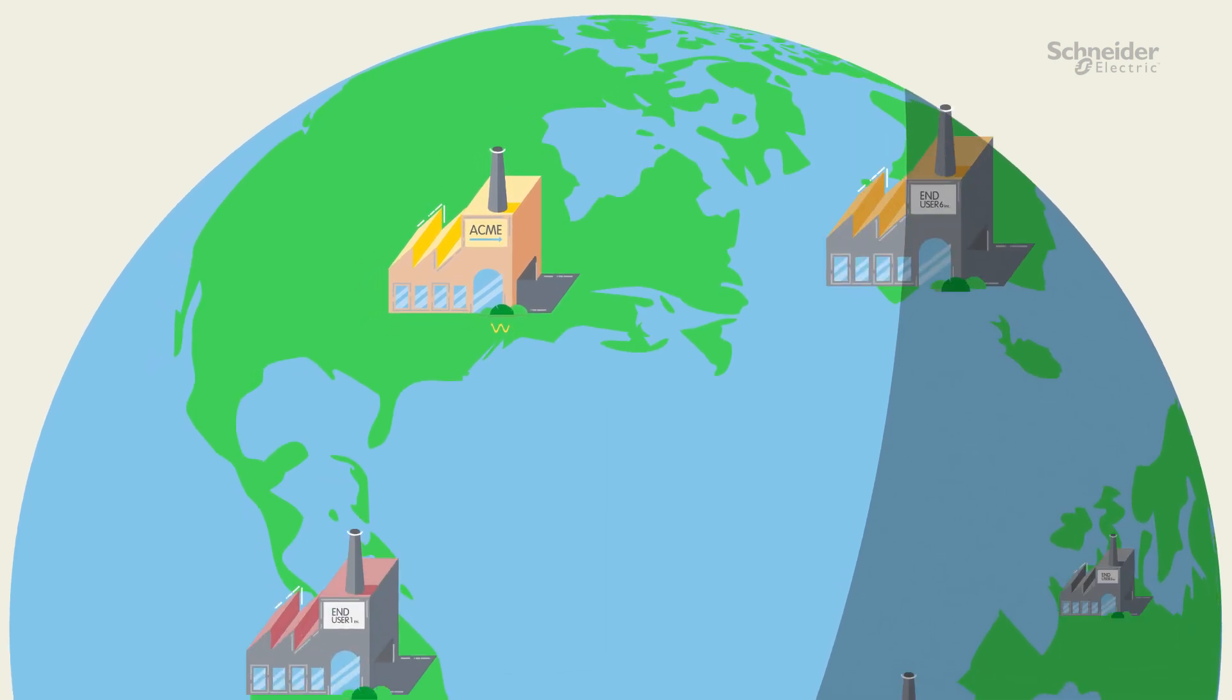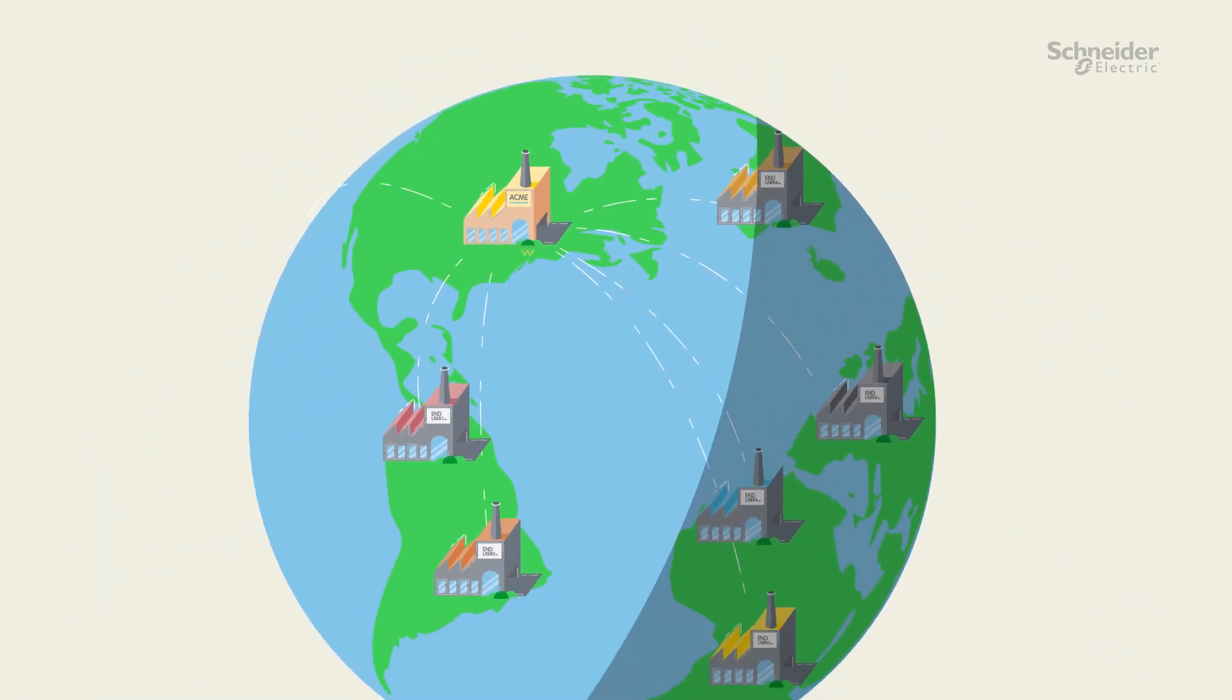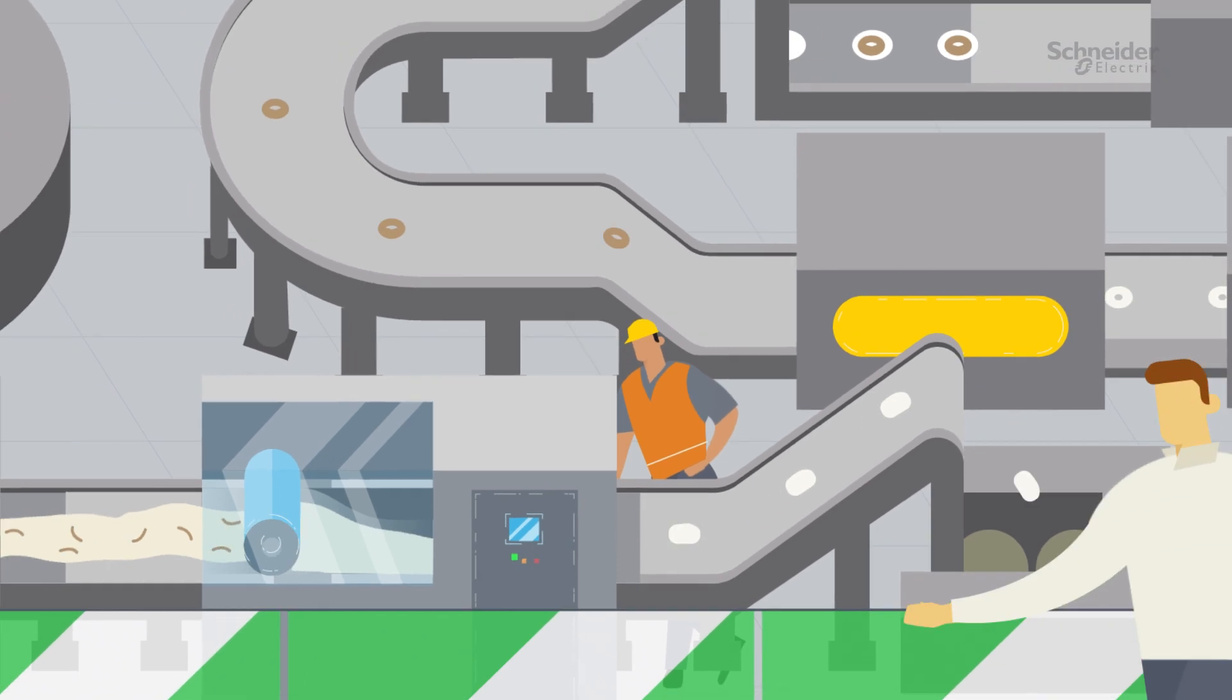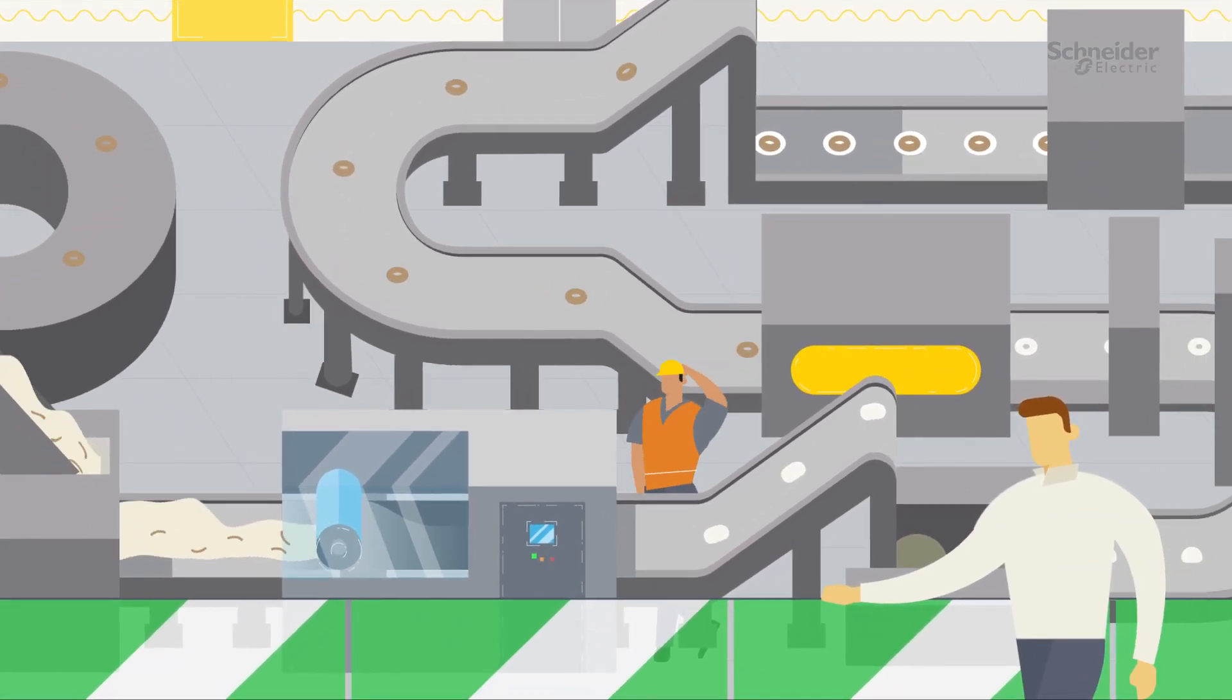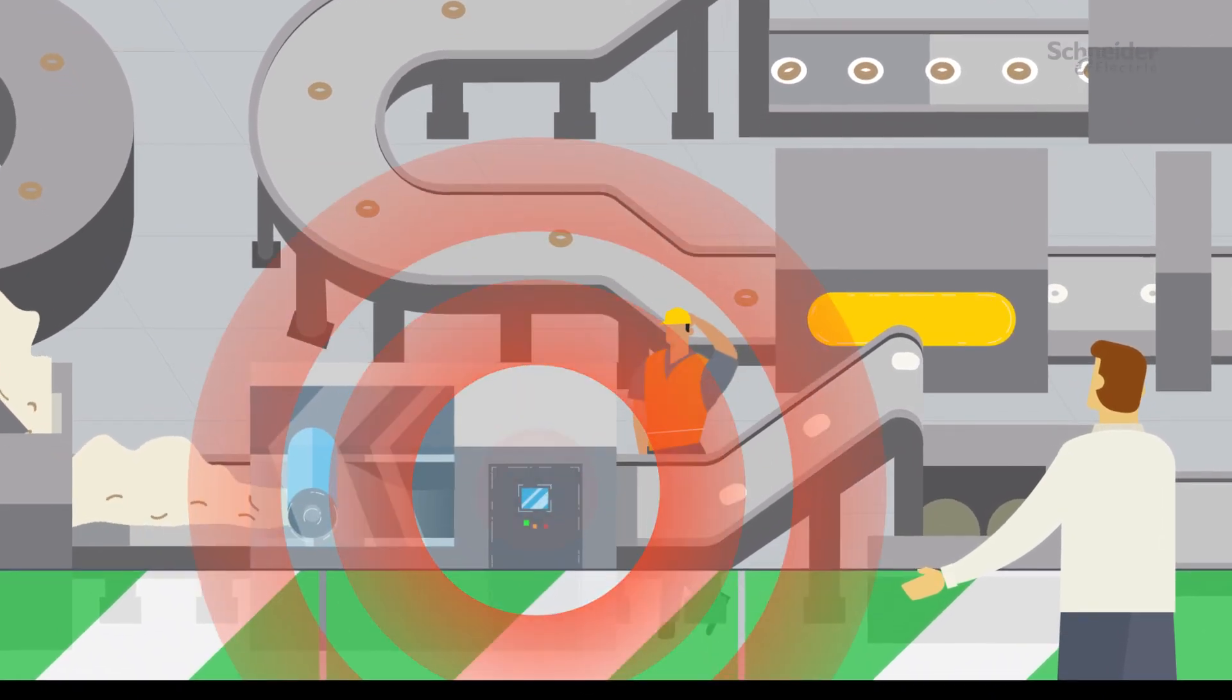As an OEM, you may have customers all over the world and they expect you to support their machines wherever they are. They rely on all the components working smoothly across their lifecycle. But what happens if your end user requires service and you aren't able to provide direct assistance?